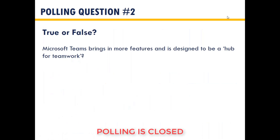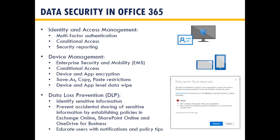Polling question number two — true or false: Microsoft Teams brings in more features and is designed to be a hub for teamwork. A couple more security features in Office 365 include identity and access management. We want to make sure that we have authorized users and authorized devices accessing our data in the cloud. We could require multi-factor authentication, which may prevent someone whose compromised credentials are out there from getting in. Conditional access can limit who can access data from where or from what device. Advanced security reporting tells us who's trying to access what from where.